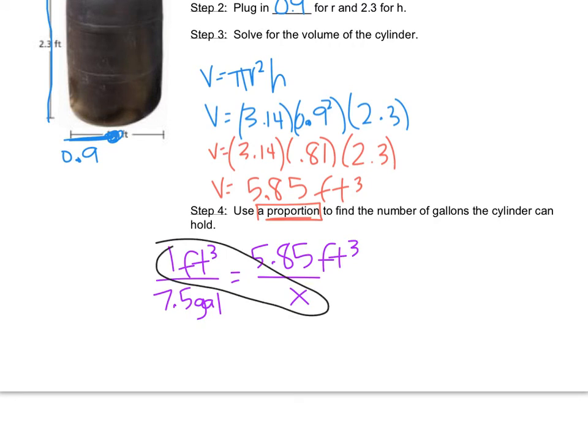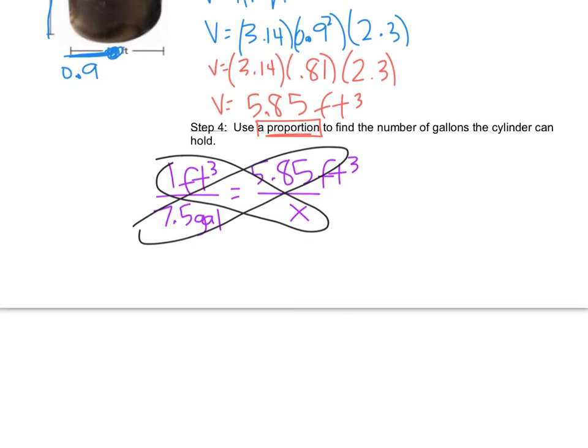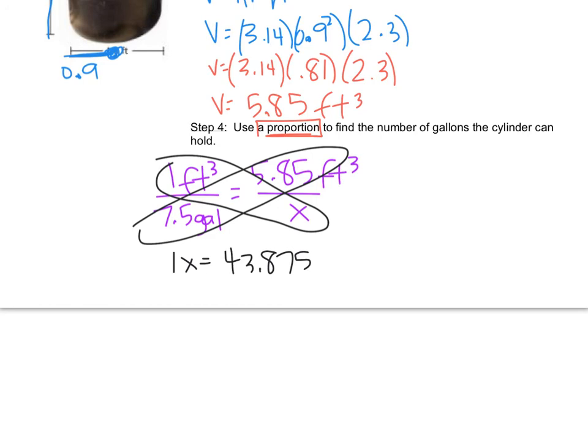You get - I'll get rid of the labels, you don't need the labels - so I just have 1x equals - I have to do 7.5 times 5.85, and that gives me 43.875. I don't know, does it say what to round to?